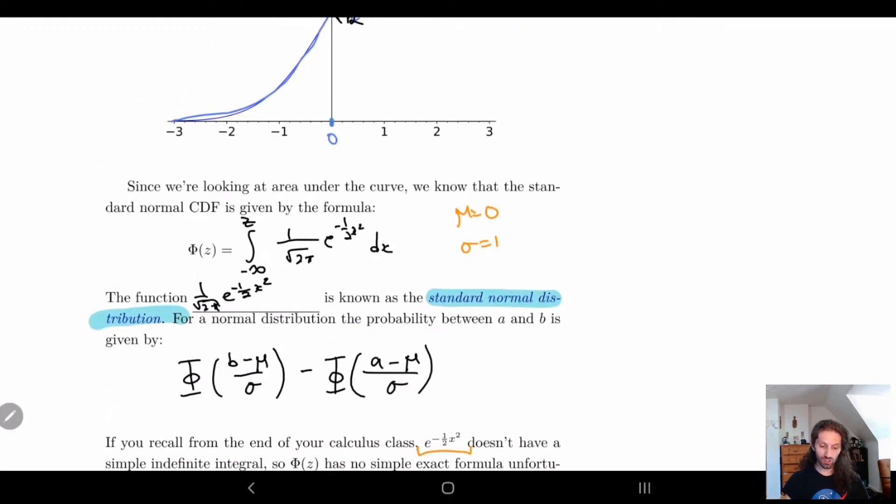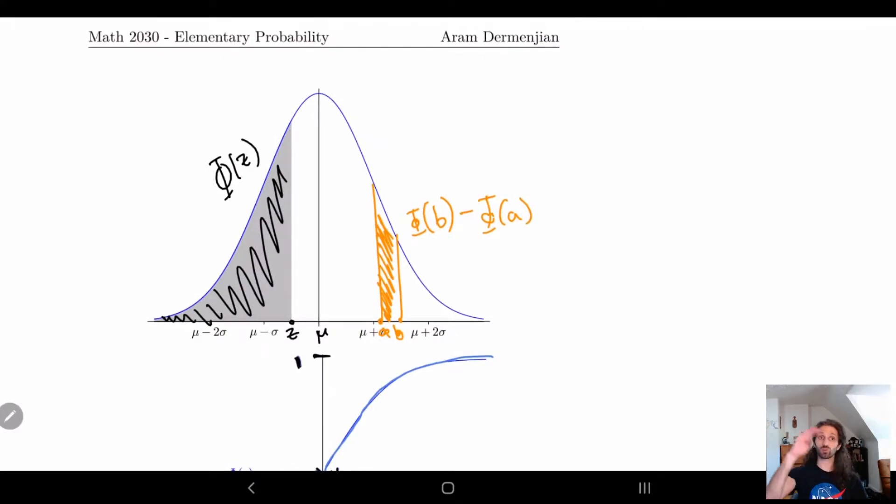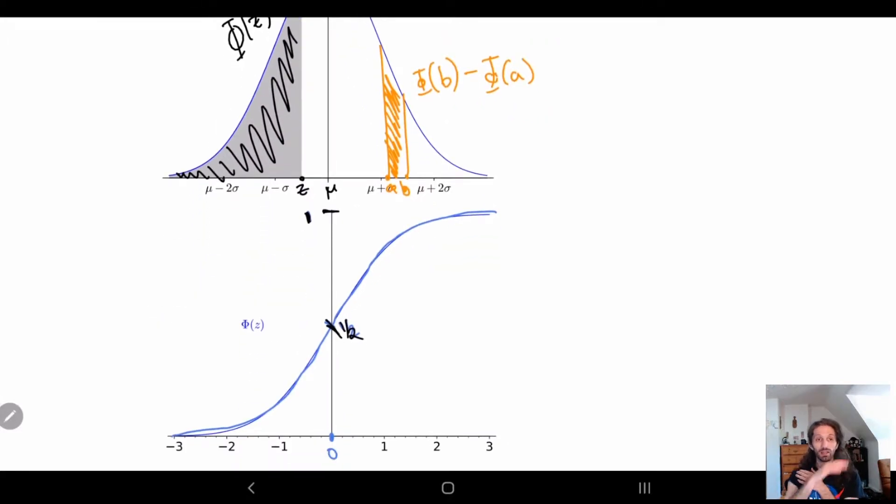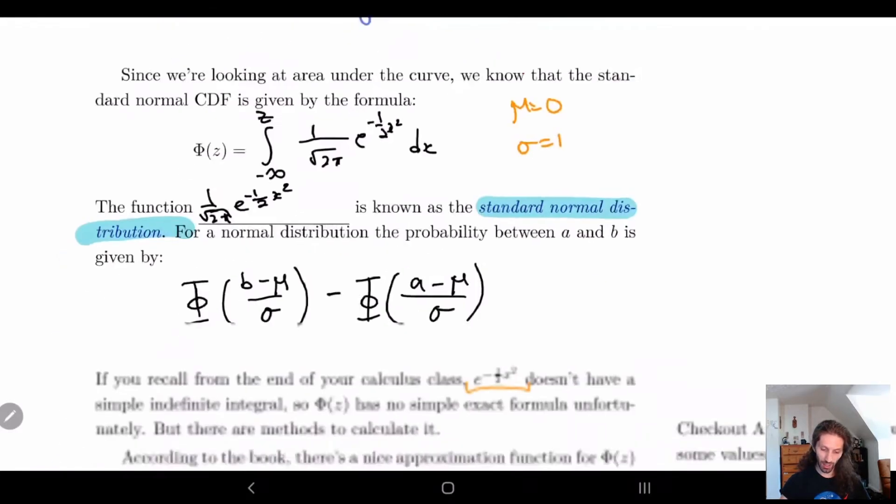Let me do a quick recap. Remember that we had this normal curve. We said that Φ(z) is going to be everything to the left of this curve, the area under the curve, and that will give us Φ(z). This curve looks like this—we get this nice little curve. Since the area under the curve is equal to one, we have that Φ(0) is going to give us one half.